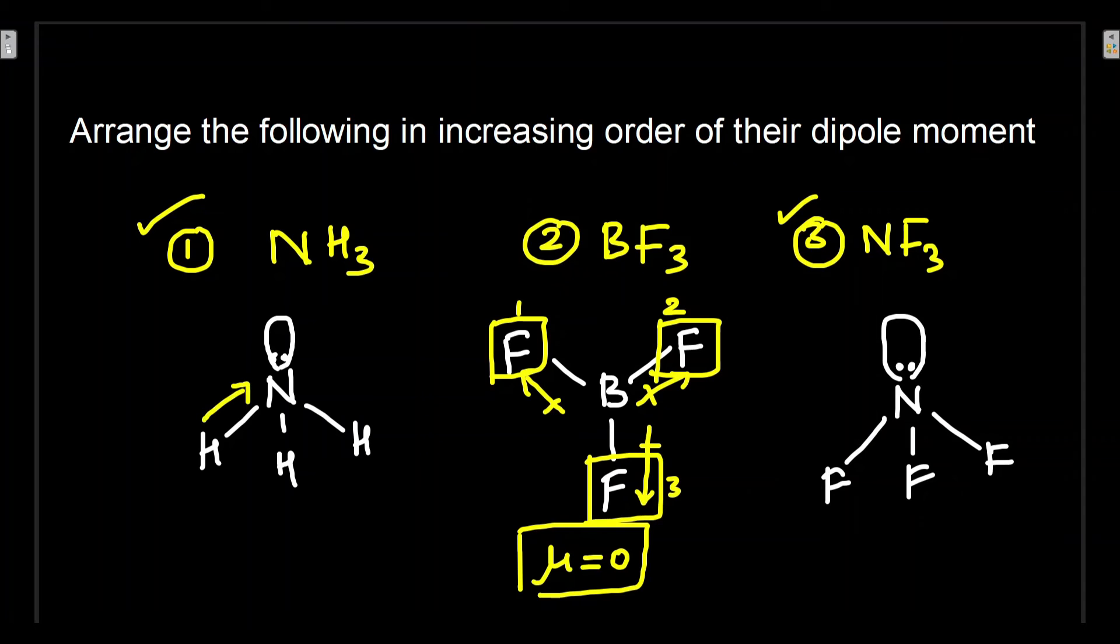The electron pull will be towards the nitrogen like this, and also there are electrons pulling this side. So overall net dipole moment will be only in one direction. Got it?